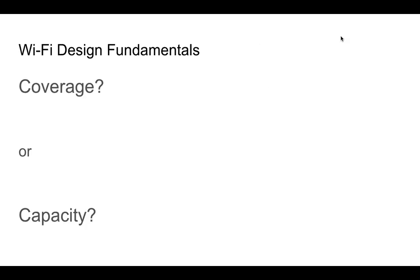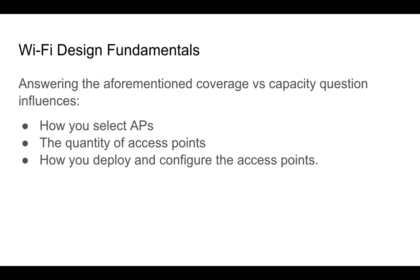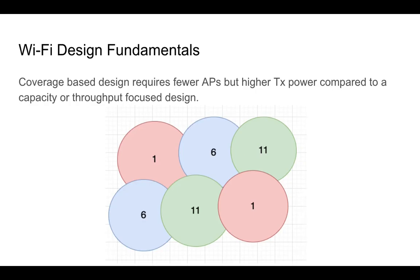Now let's talk about Wi-Fi design fundamentals. When designing Wi-Fi networks, there are two key questions to ask: am I designing for coverage or am I designing for capacity? The answer will influence the type of access points you select, the quantity of those access points, and how you deploy and configure them. Here is an example of a coverage-based design for a single floor — you have fewer access points set to a much higher transmit power compared to a throughput-focused design.